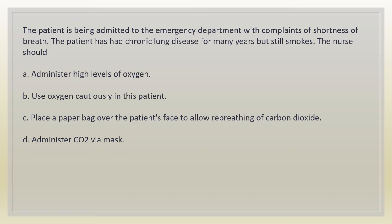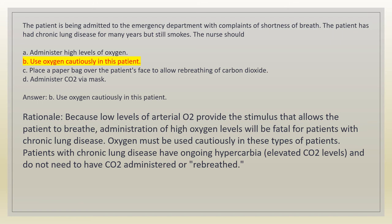The patient is being admitted to the emergency department with complaints of shortness of breath. The patient has had chronic lung disease for many years but still smokes. The nurse should: A. administer high levels of oxygen. B. use oxygen cautiously in this patient. C. place a paper bag over the patient's face to allow re-breathing of carbon dioxide. D. administer CO2 via mask. Answer: B. Use oxygen cautiously. Rationale: low levels of arterial O2 provide the stimulus that allows the patient to breathe. Administration of high oxygen levels will be fatal for patients with chronic lung disease. Patients with chronic lung disease have ongoing hypercapnia and do not need CO2 administered or re-breathed.